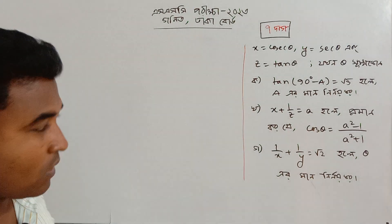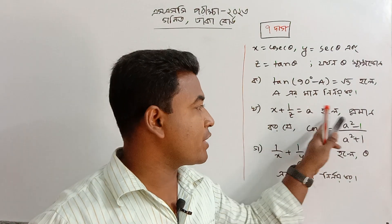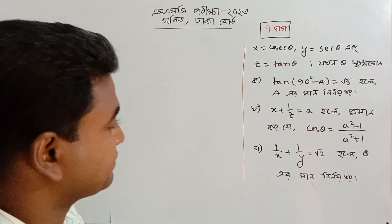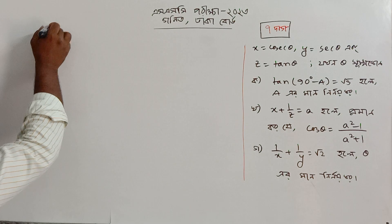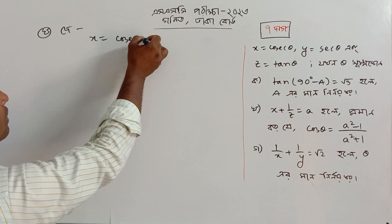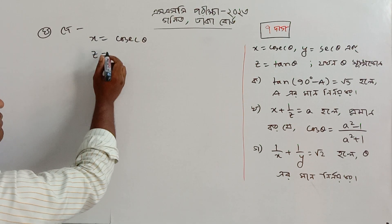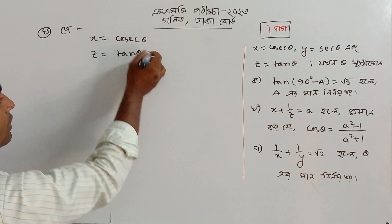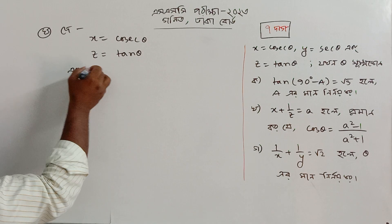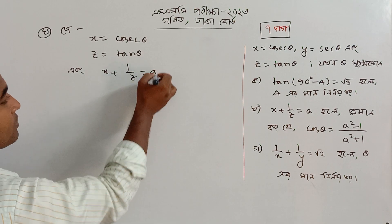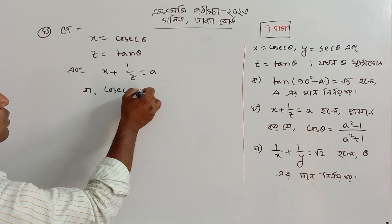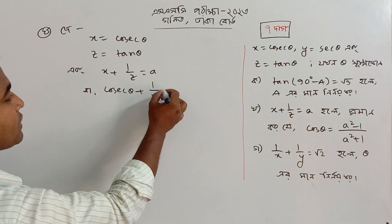We will make two degrees of this side. x plus 1 by z equal to a curve, equal to a squared minus 1 over a squared plus 1. x and z... again is equal to 1 to theta and then tan theta.